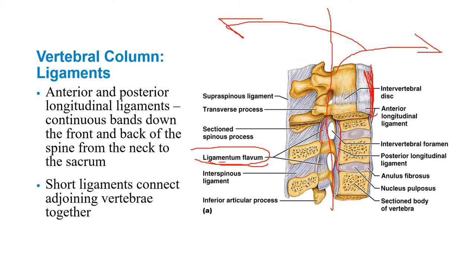You also have the ligamentum flavum, which forms the posterior wall of the spinal canal. The spinal cord runs down the center through the vertebral canal. The ligamentum flavum is not really a strong ligament to check movement — it's more for protection and has flexibility to it. There are also other short ligaments like the supraspinous ligament across the whole back and interspinous ligaments in between.